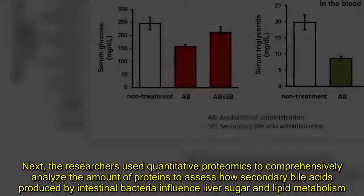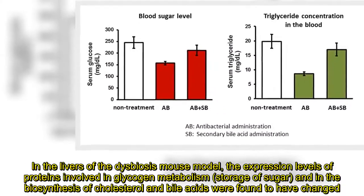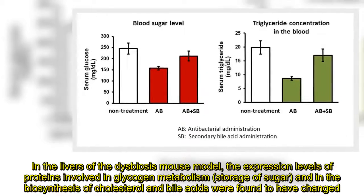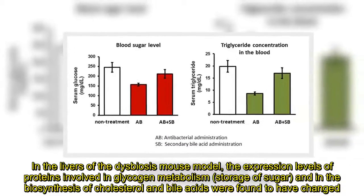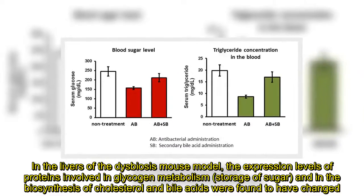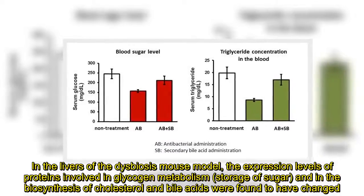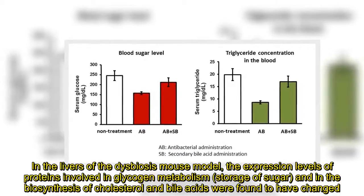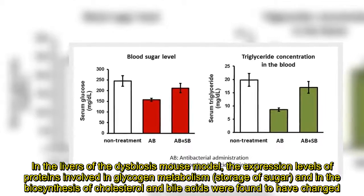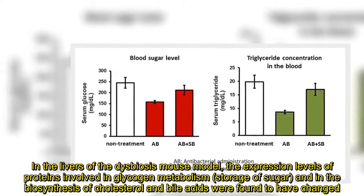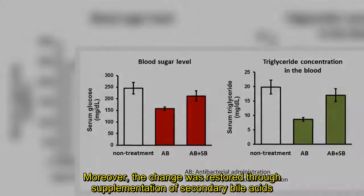In the livers of the dysbiosis mouse model, the expression levels of proteins involved in glycogen metabolism, storage of sugar, and in the biosynthesis of cholesterol and bile acids were found to have changed. Moreover, the change was restored through supplementation of secondary bile acids.